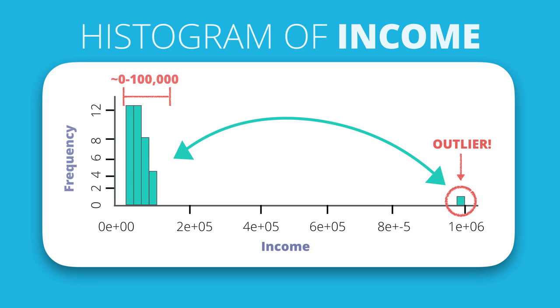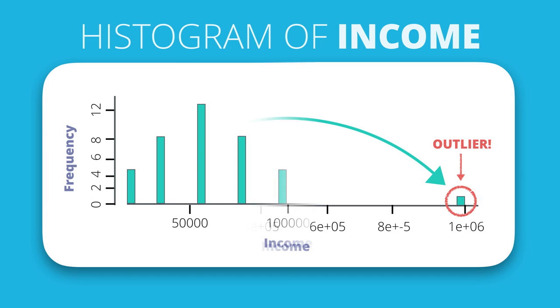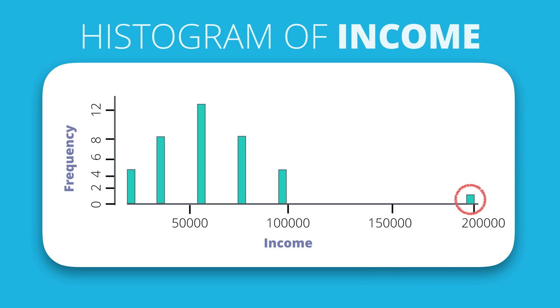But what if that single value was only 200,000 and it looked like this? It is far to the right and seems to be extreme, but 200,000 compared to the range of zero to 100,000 isn't quite that extreme. So is it an outlier?